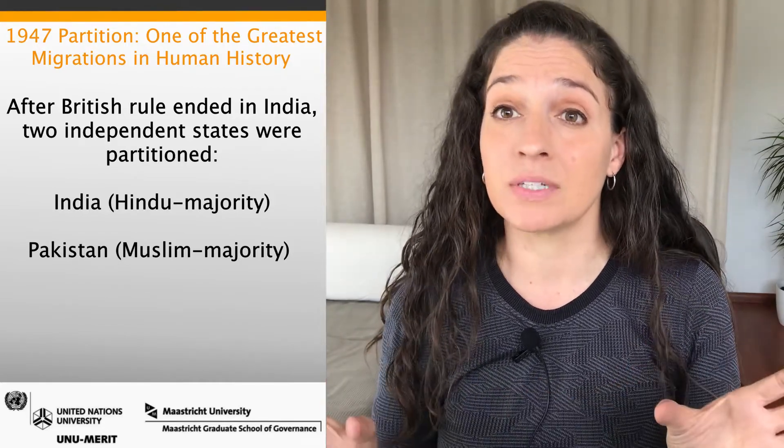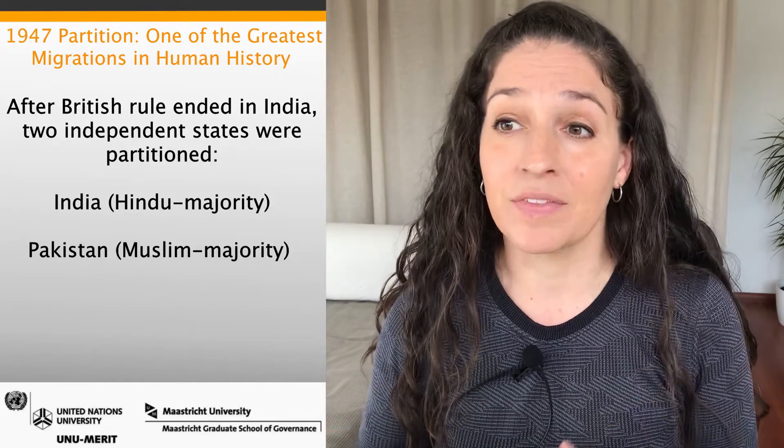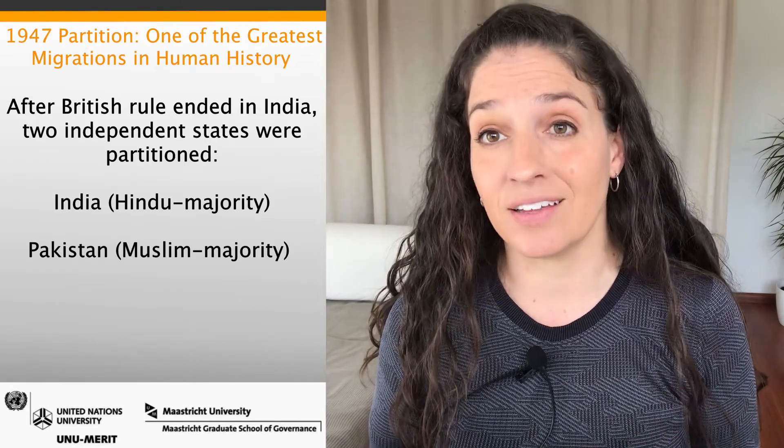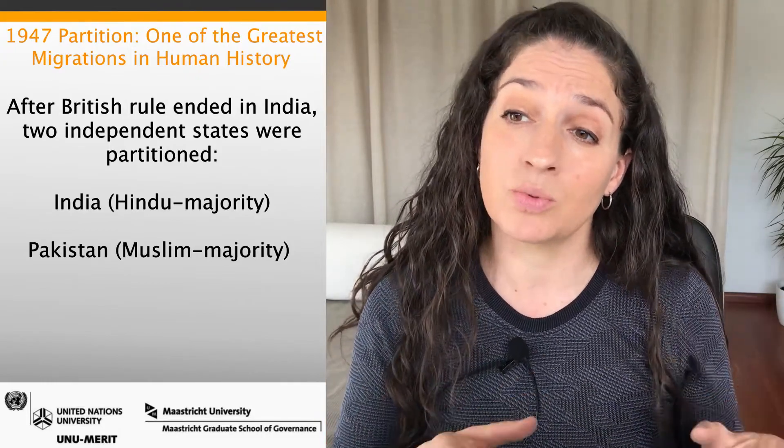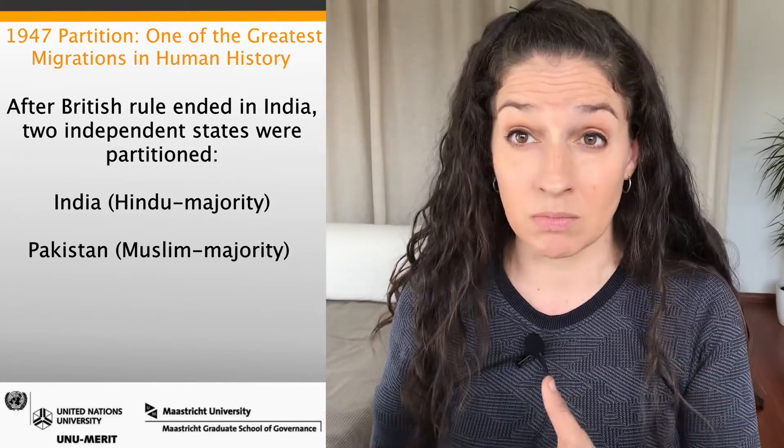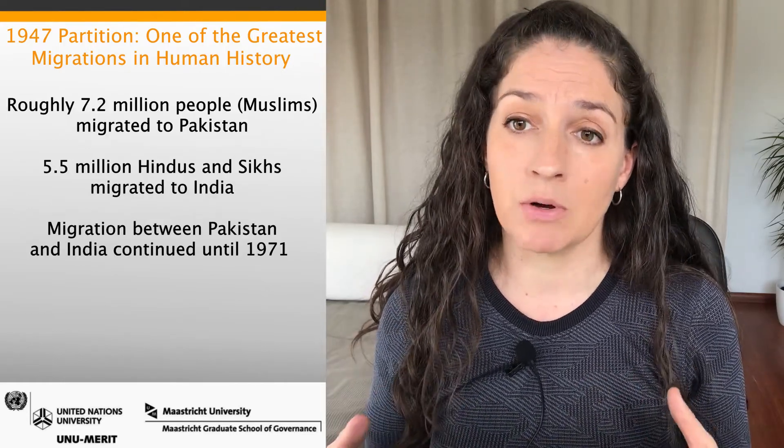Now let's look at the partition of 1947, where India and Pakistan were split. This triggered one of the largest migrations in history. British rule ended in India and the subcontinent was partitioned in August of the same year into two independent states: India, which was a Hindu majority, and Pakistan, which was a Muslim majority. Because of this partition, millions of people migrated between the east — India — and the west — Pakistan.